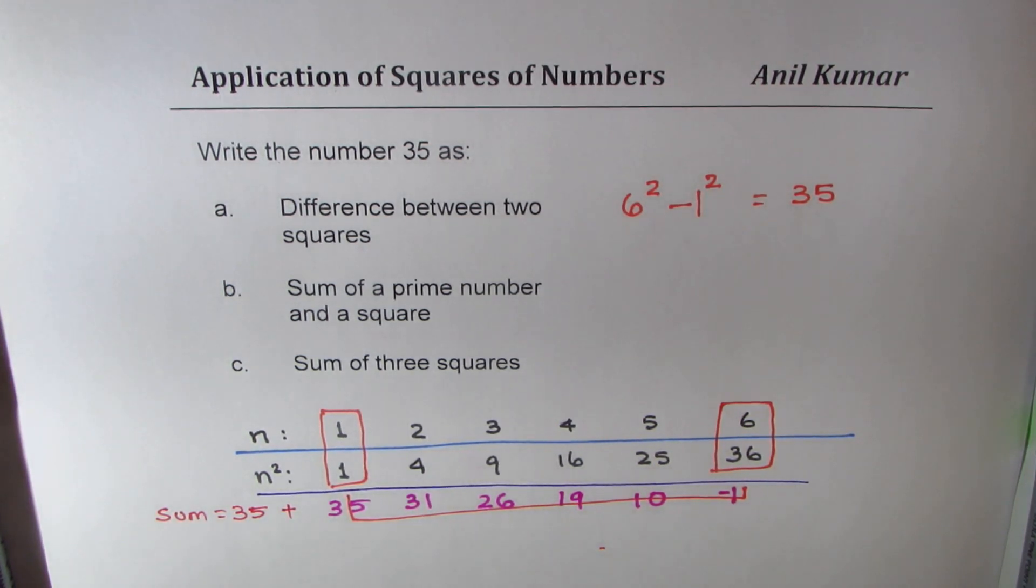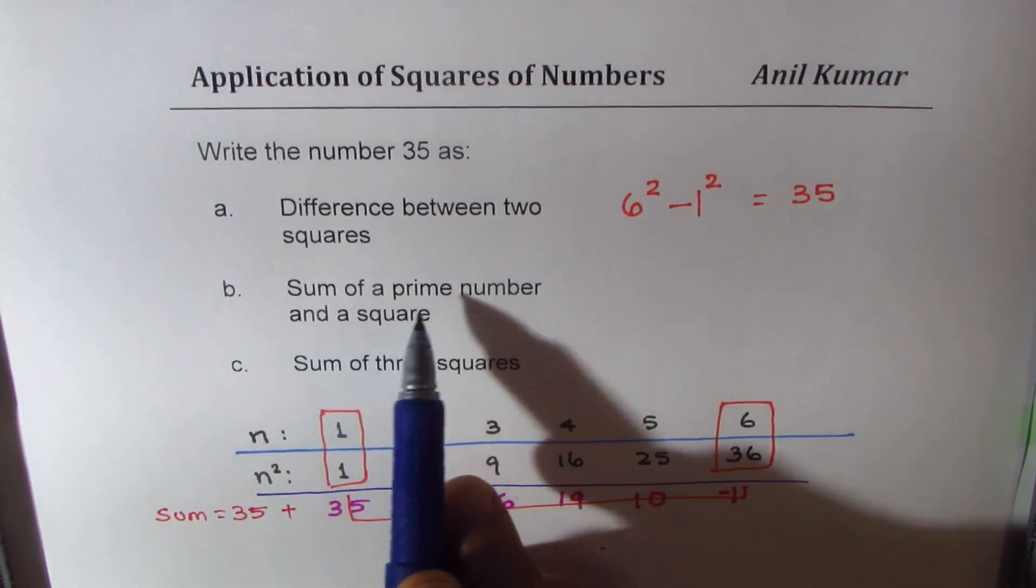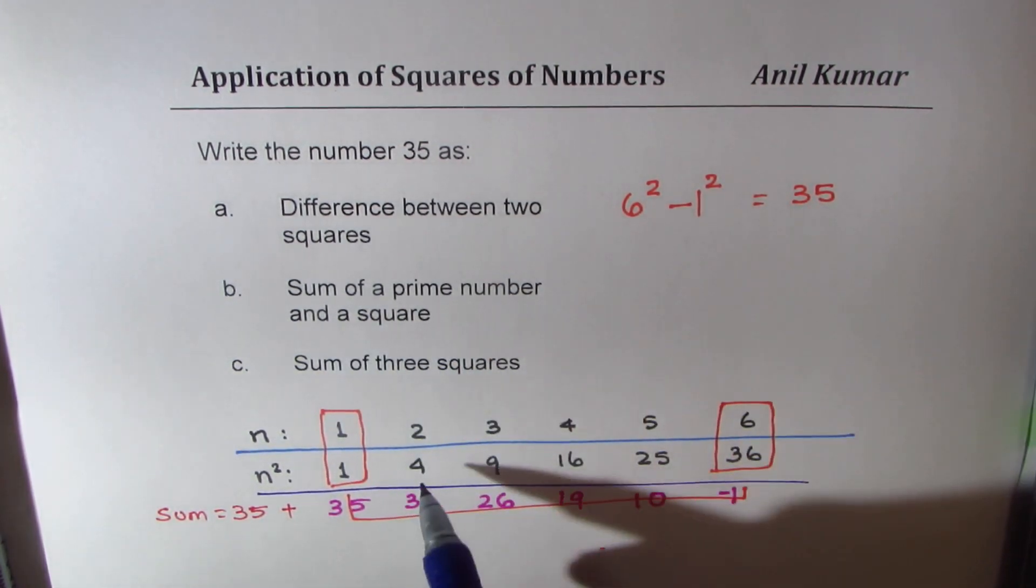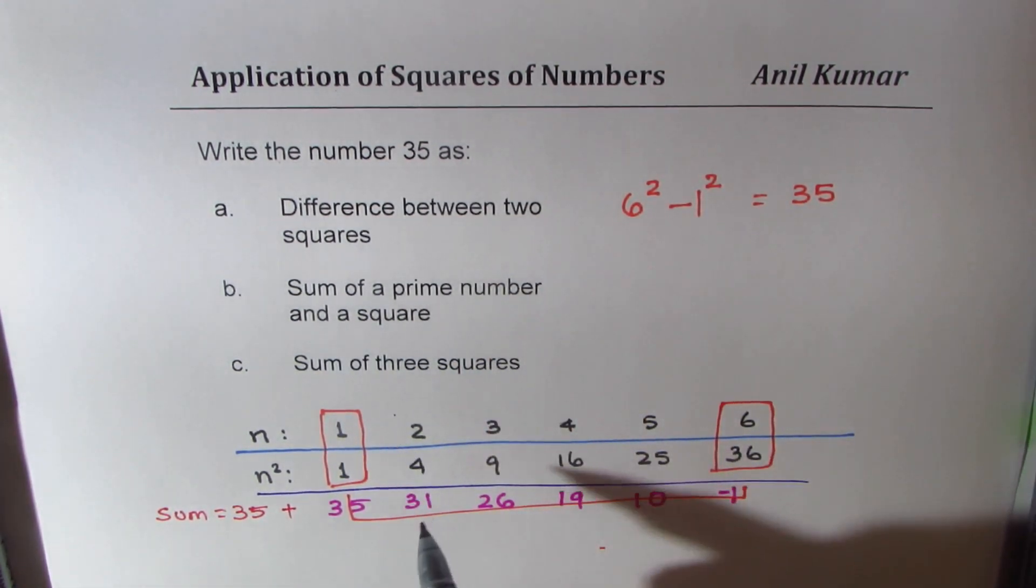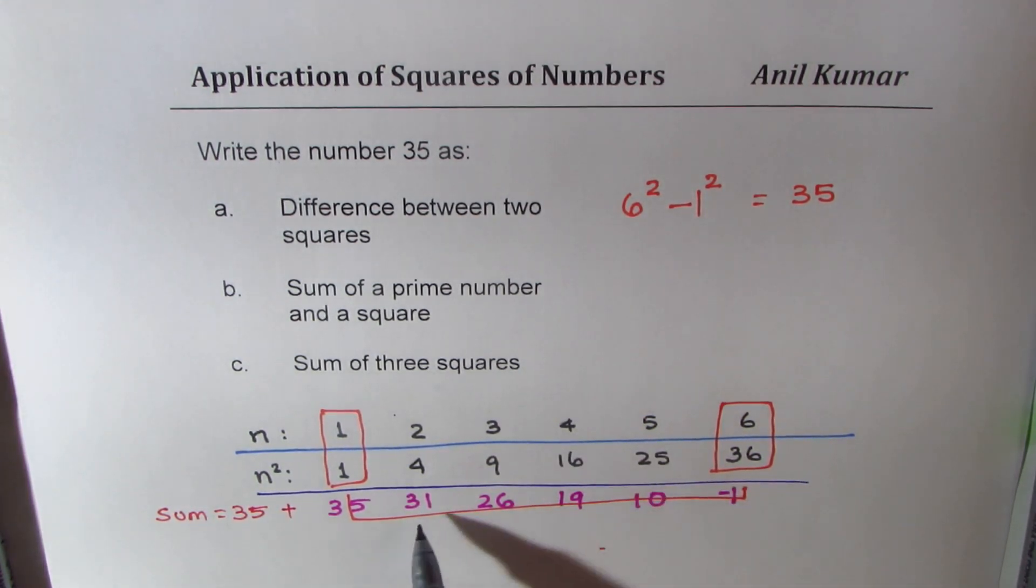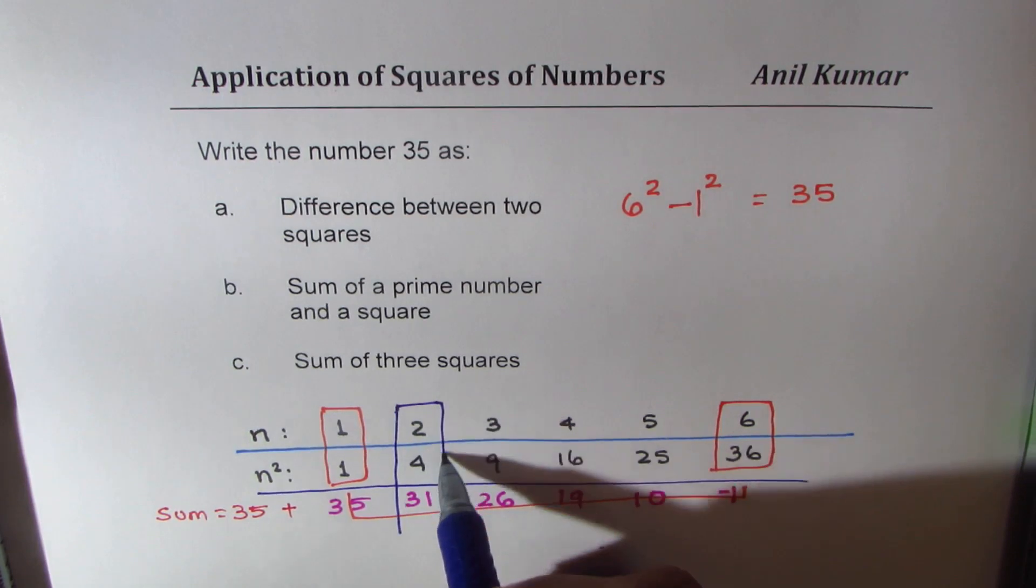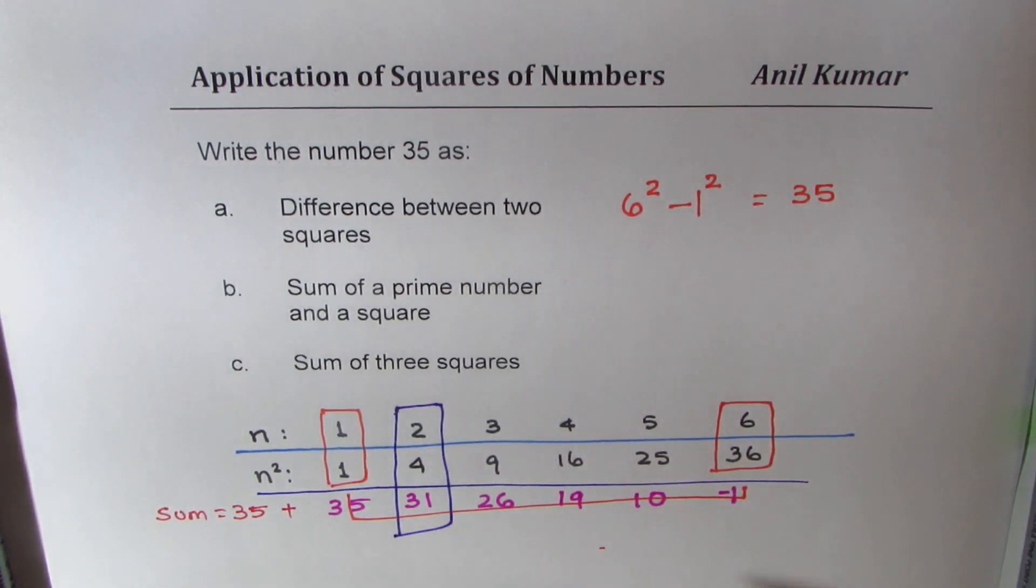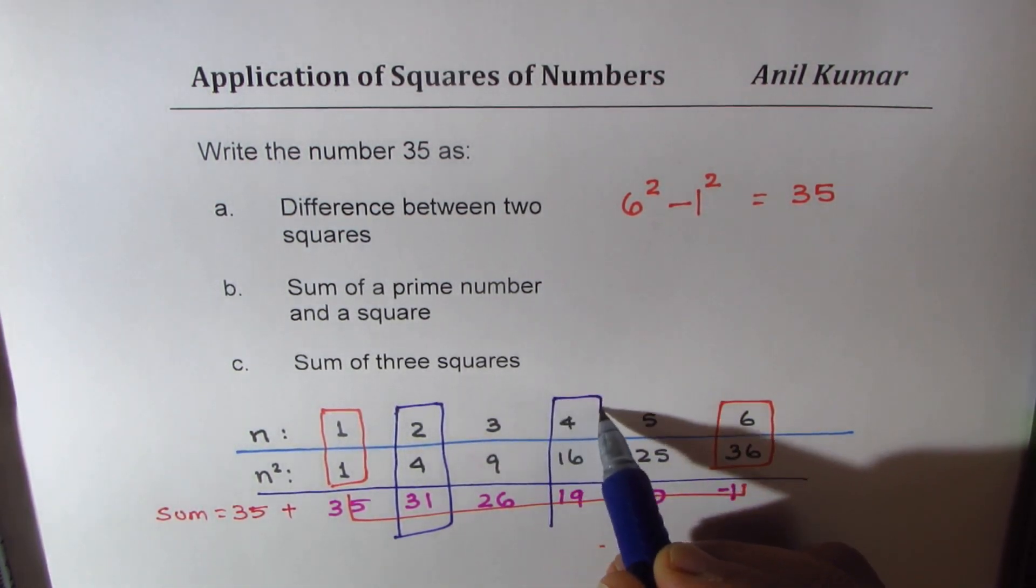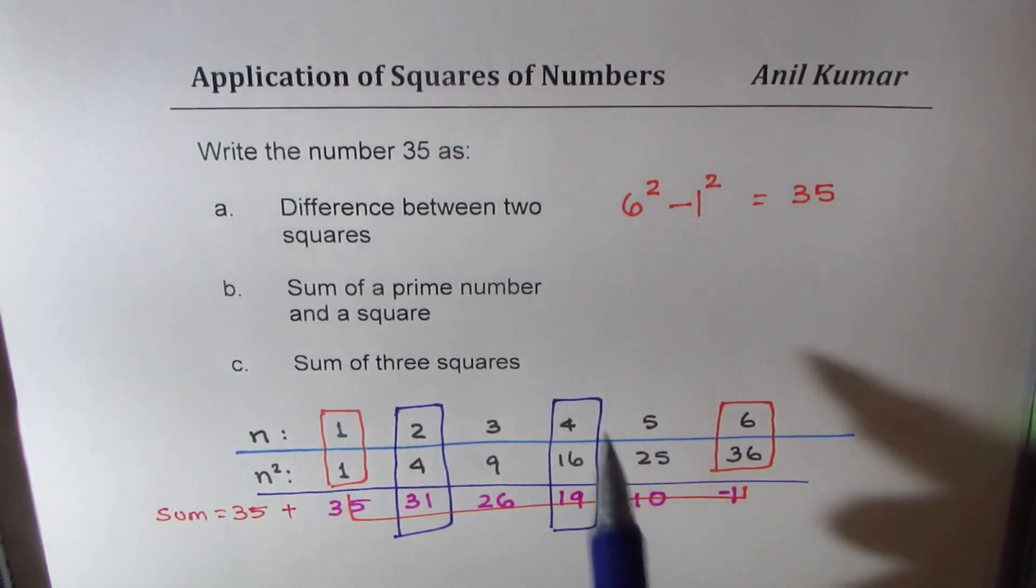We have two solutions here. We could give the solution as sum of a prime number and a square. So, one of them could be adding 31 to 2 square. The other could be adding 4 square and 19. There are two solutions.